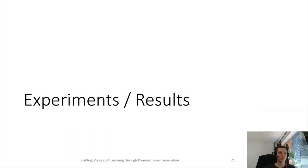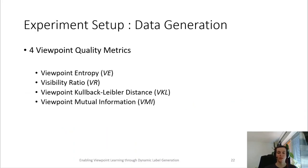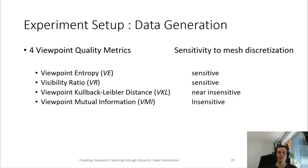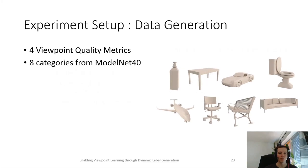Now, I want to go to the experiments in our paper. In our experiments, we consider four different viewpoint quality metrics: the viewpoint entropy, the visibility ratio, the viewpoint Kullback-Leibler distance, and the viewpoint mutual information. These viewpoint quality metrics have different levels of sensitivity to the input mesh discretization. However, these methods are still all sensitive to the input mesh quality and suffer, for example, from self-intersections or non-surface meshes.